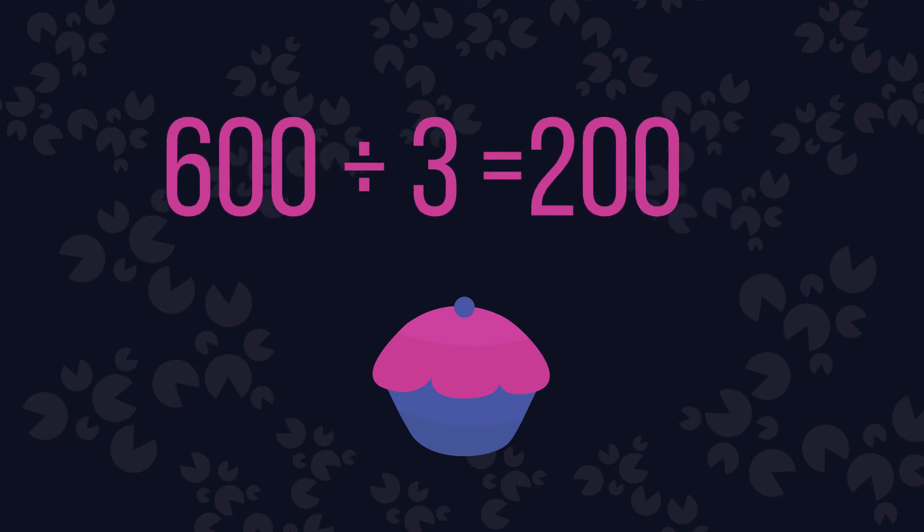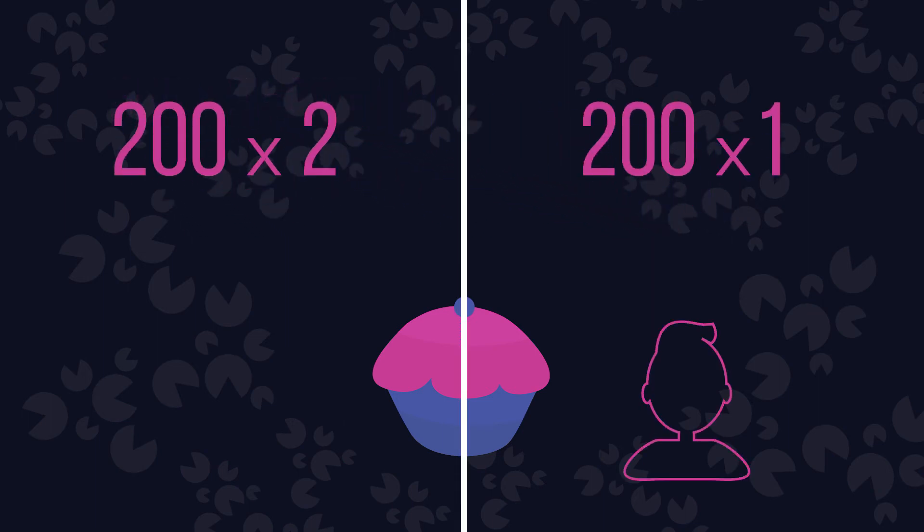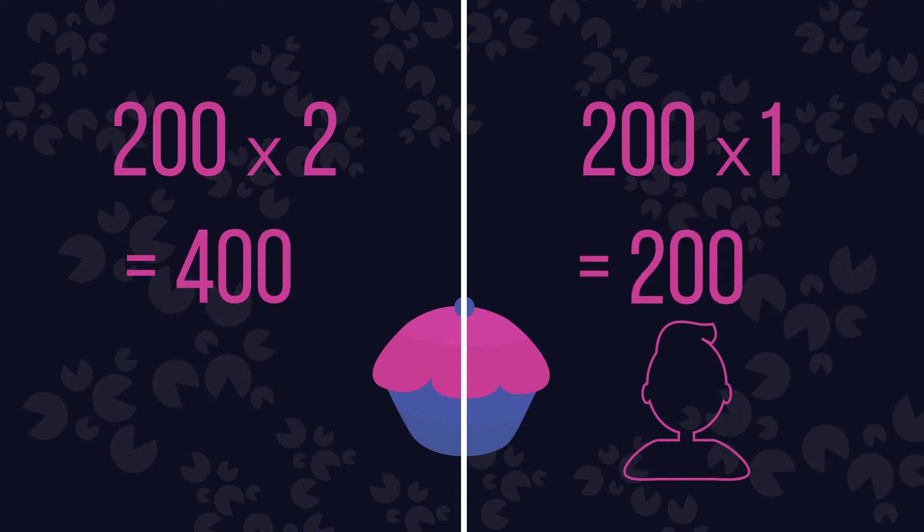Finally, we would multiply 200 by our initial ratio parts, resulting in 400 cupcakes for you and 200 cupcakes for your friend.